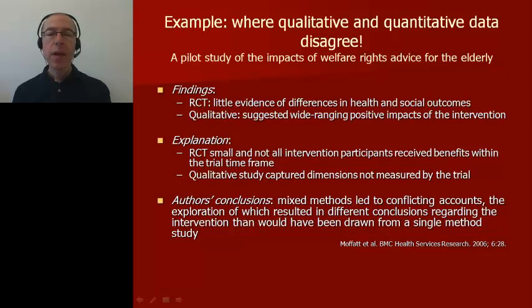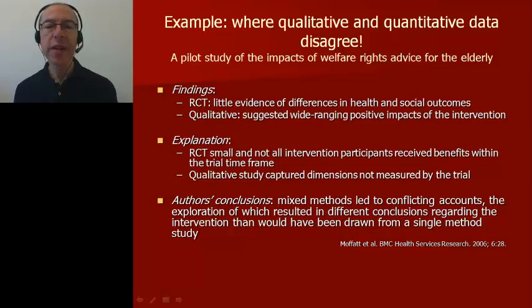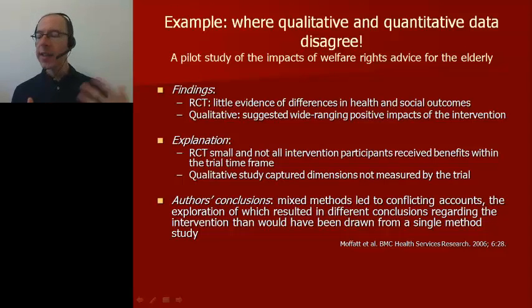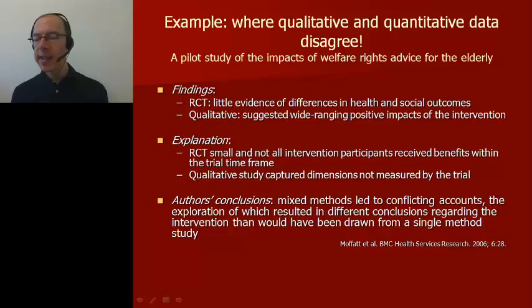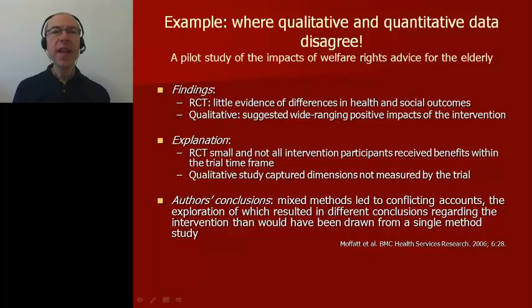The randomized controlled trial found little evidence of differences in health and social outcomes between those who received welfare officer support and those who did not. The qualitative research, however, suggested wide-ranging positive impacts of the intervention. In trying to understand this discrepancy, the authors suggested first that the trial was small — only 100 people — and not all intervention participants received their benefits within the trial timeframe. More importantly, the qualitative study captured dimensions not actually measured in the trial, such as maintaining independence through being able to afford help at home and having better access to facilities.